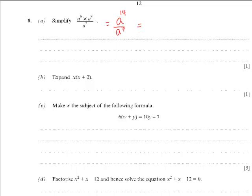When we divide two numbers or letters with the same base, the powers are subtracted. So a to the 14 over a to the 7 is a to the 14 minus 7, which is a to the 7.